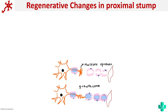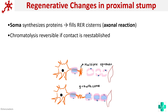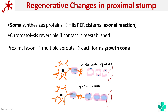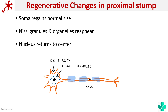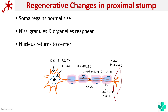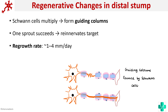Regeneration changes in the proximal stump: the soma resumes protein synthesis, fills the rough endoplasmic reticulum — this is called axonal reaction — and chromatolysis is reversible. Multiple sprouts form growth cones, the soma regains normal size, the Nissl granules and organelles reappear, and the nucleus returns to the center. In the distal stump, Schwann cells multiply and form guiding columns; one sprout succeeds and re-innervates the target. The regrowth rate is around 1 to 4 millimeters per day, and Schwann cells produce new myelin sheath.